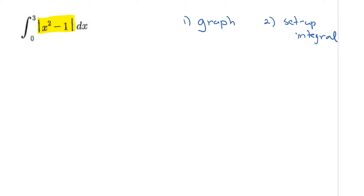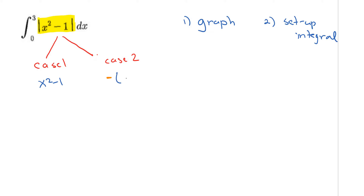Before graphing the absolute value function, remember that with absolute value functions involving parabolas you always have two cases. Case 1: you simply remove the absolute value, giving you x squared minus 1. Case 2: you put a minus sign in front of a bracket containing the original function. You can think of absolute values as having a positive side (Case 1) and a negative side (Case 2).